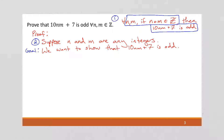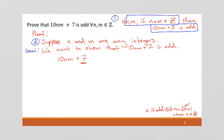So what am I going to start with? I'm going to start with what I've got: I have 10nm plus 7. And if you recall the definition of odd — a number n is odd if and only if n equals 2k plus 1, where k is some integer. That k is just a placeholder; I use k because it's traditional. So I want to get it in that form. I need to get that plus 1 at the end, so I'm going to pull apart this 7. This is the same thing as 10nm plus 6 plus 1 — I still have 7, but now I have that 1 on the end that I was looking for. And this is by algebra.